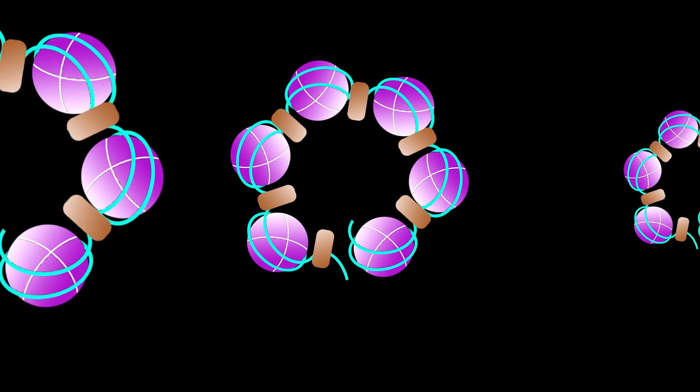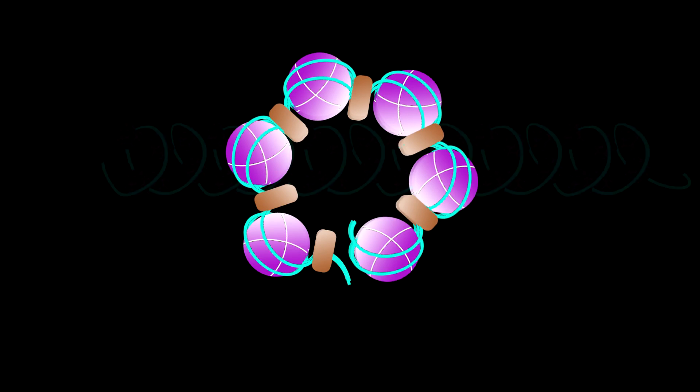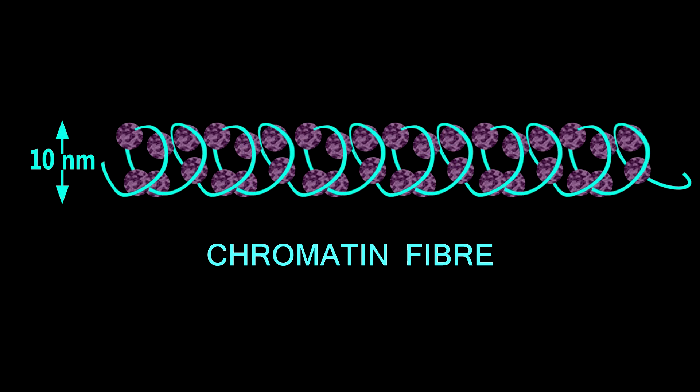Some oligonucleosomes make a chromatin fiber with a width of 10 nanometers. H1 proteins are located towards the center of the oligonucleosome.